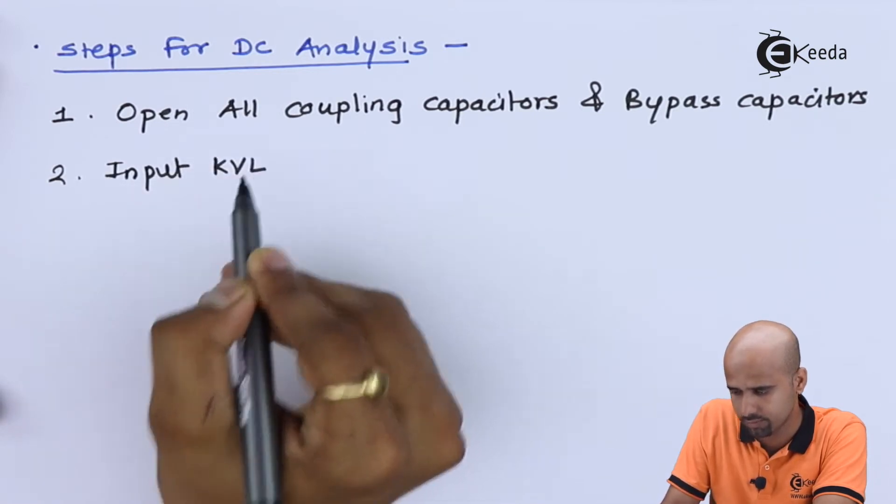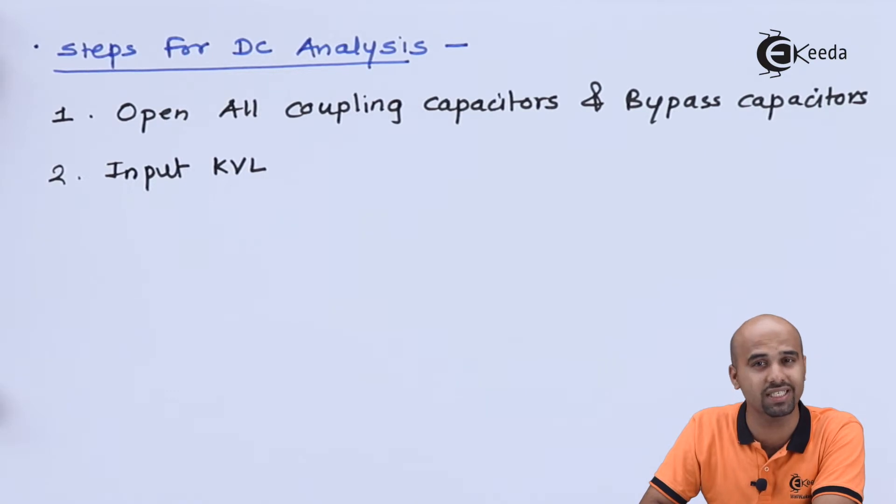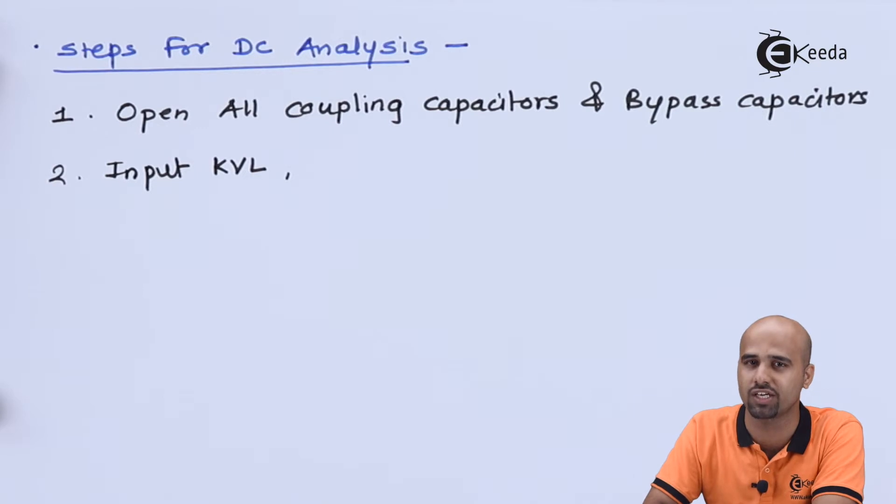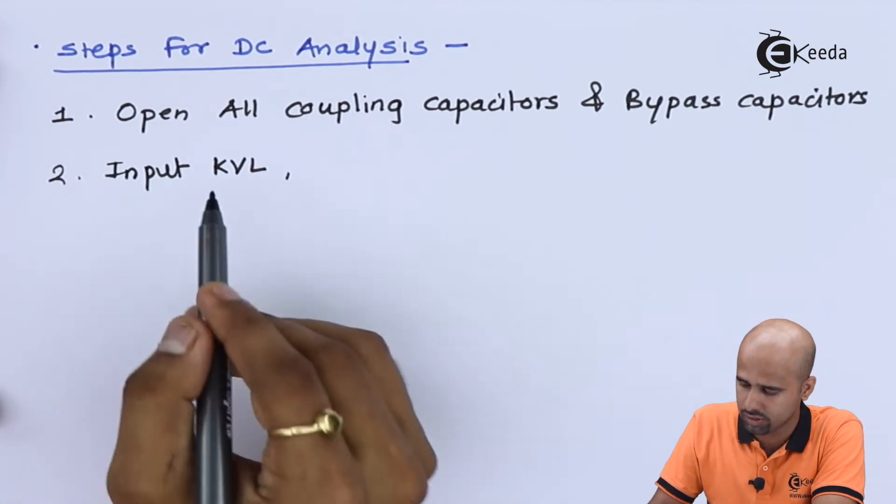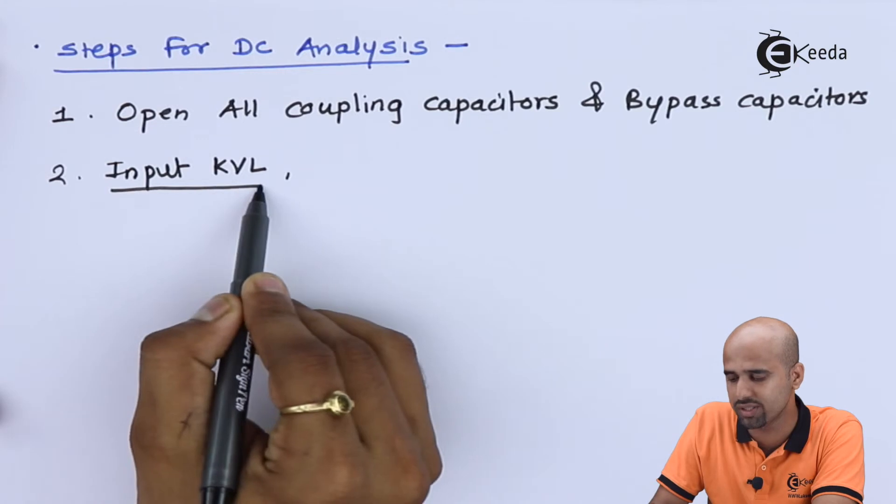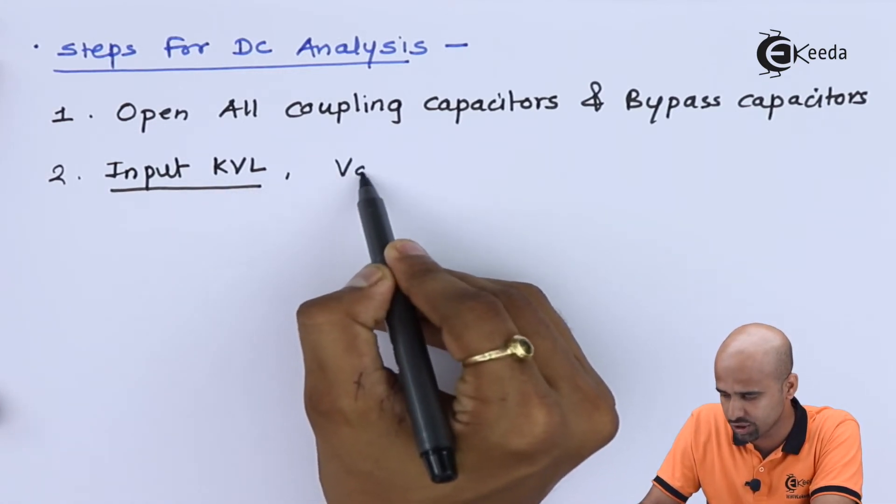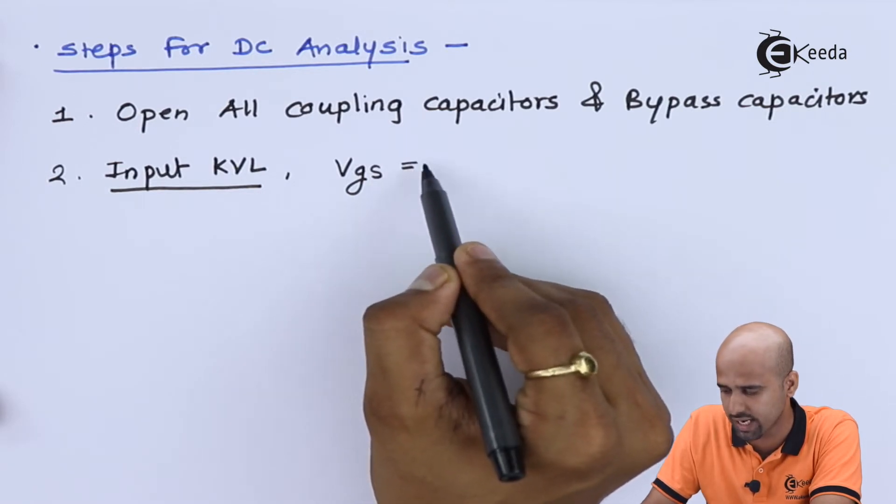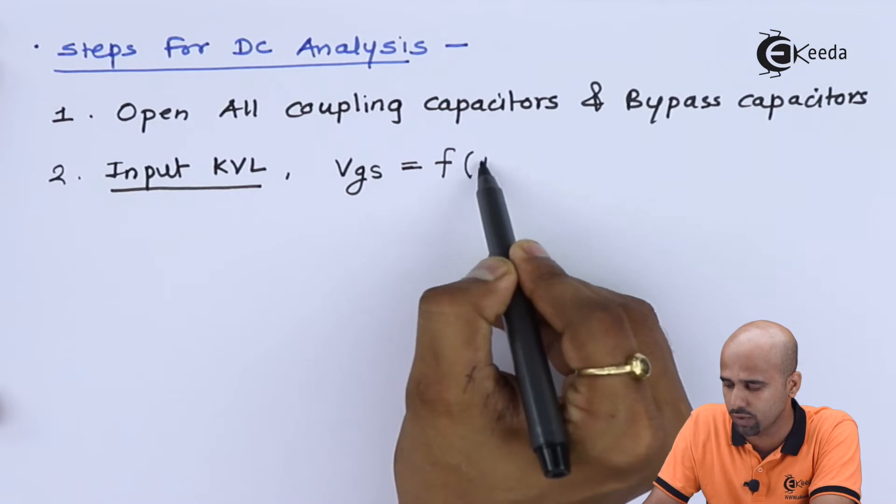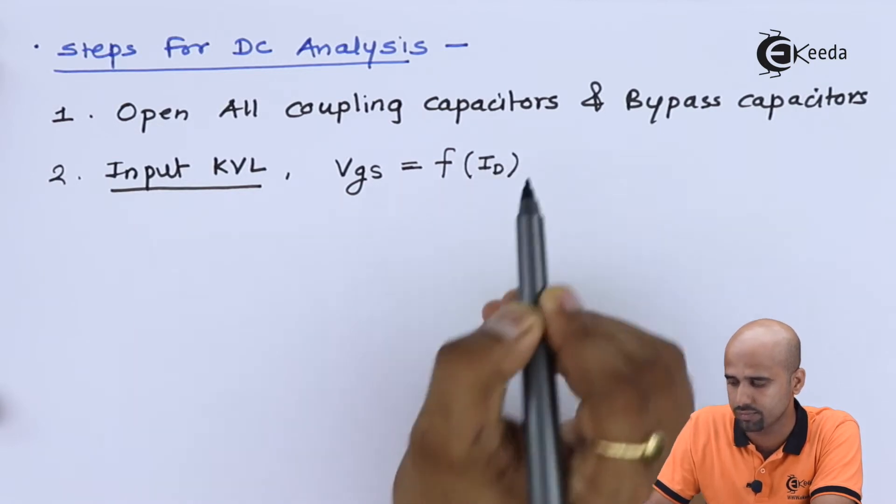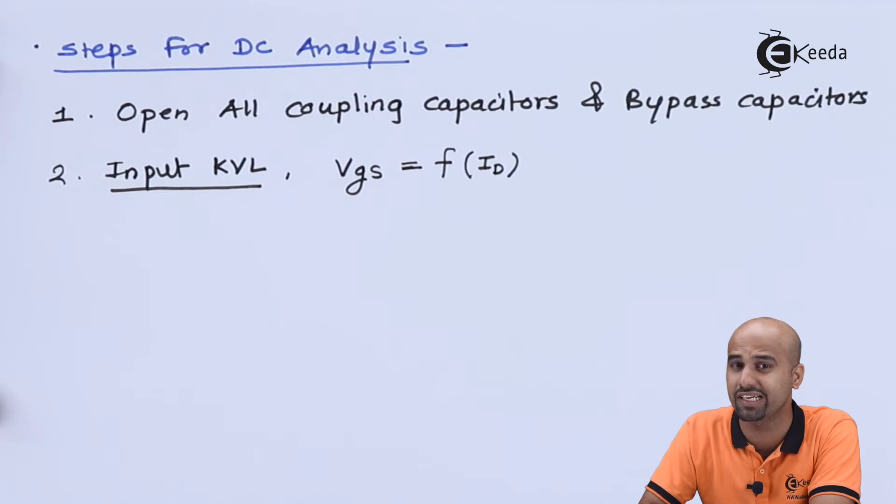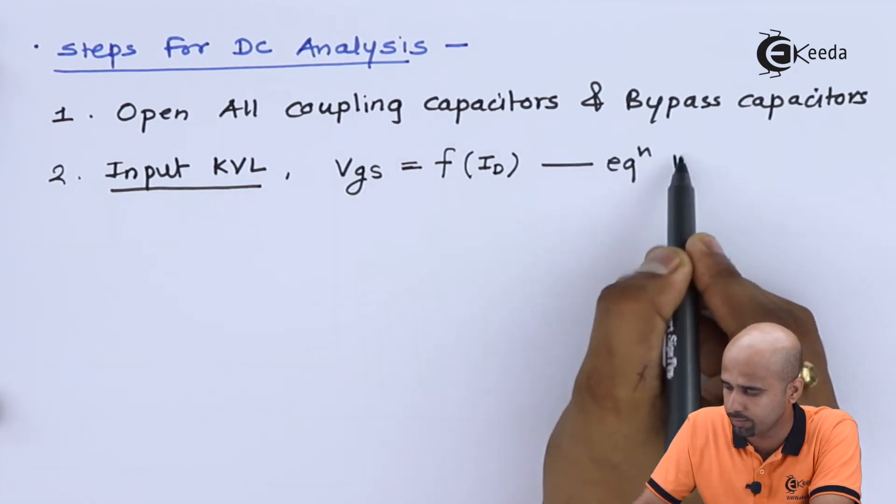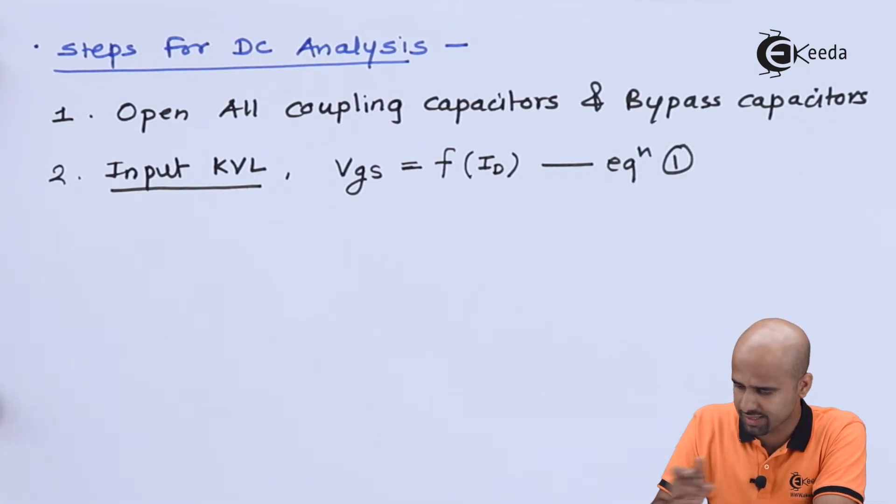Then second step is input KVL. Now, unlike BJT DC analysis, we have to change some strategy to solve DC analysis numerical in your FET. That is, while doing this input KVL, we will get the relationship between VGS and ID. So I can say that VGS is a function of ID. I will get the value of VGS in terms of ID, and that will be your equation number 1.